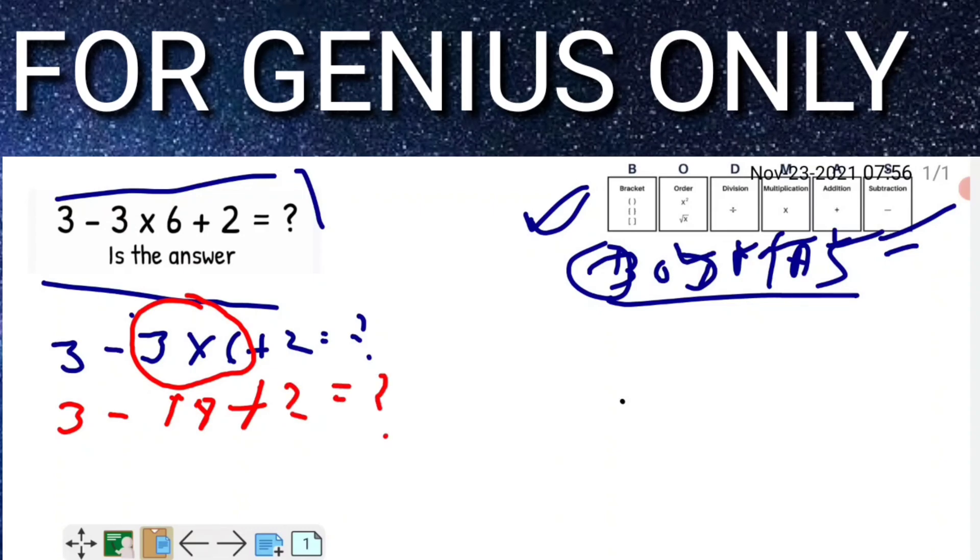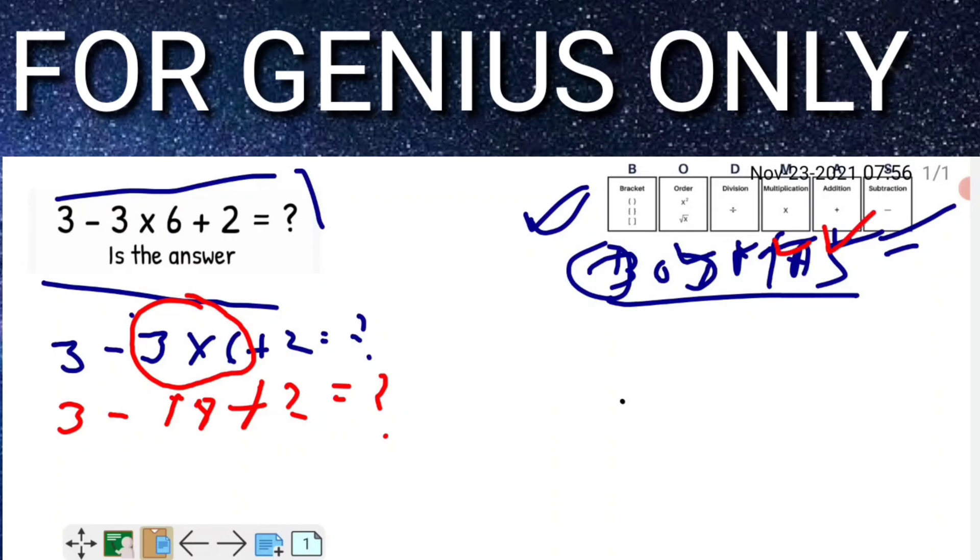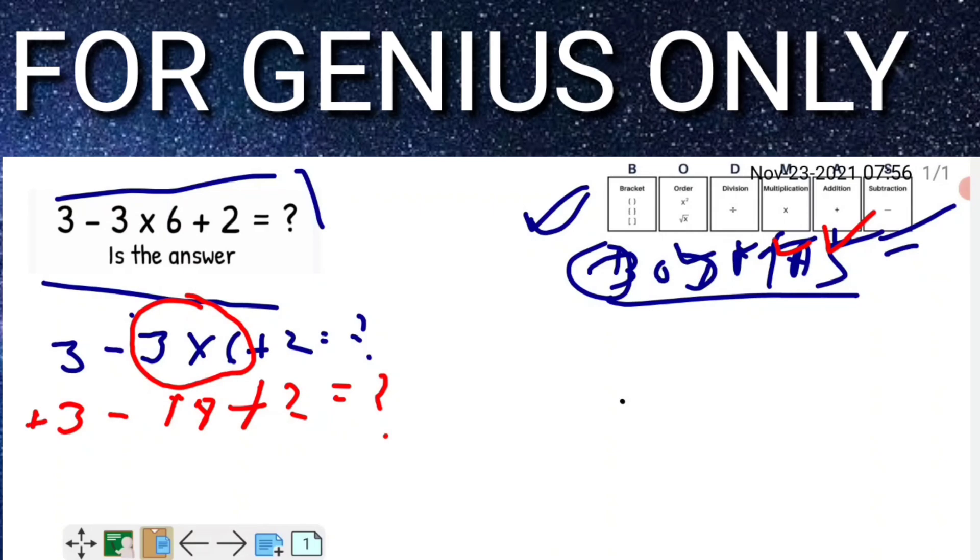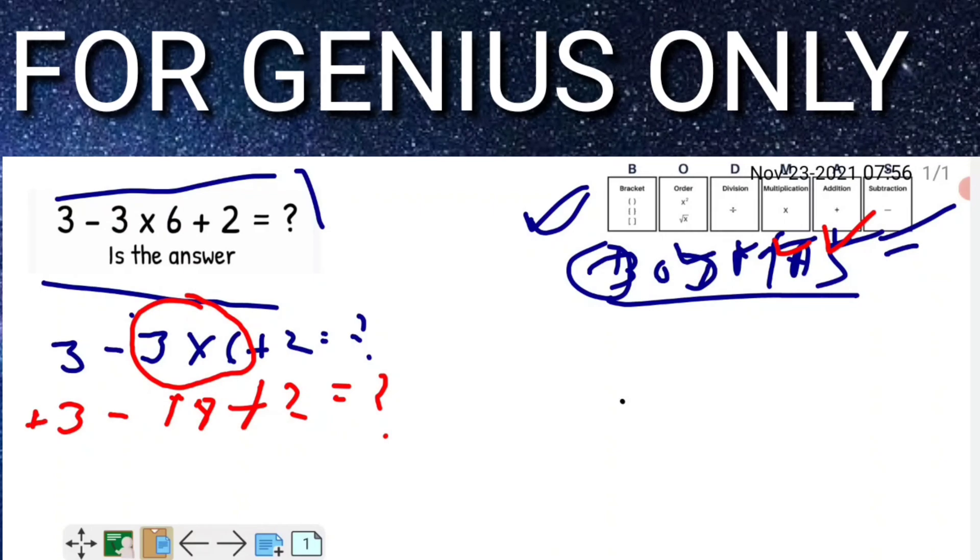See friends, after that, what we have to do is follow the multiplication. In this equation, addition is available, so I will add first. If anything before a digit has no sign, treat it as plus, which means addition. Friends, you'll find here 3 + 2 = 5.